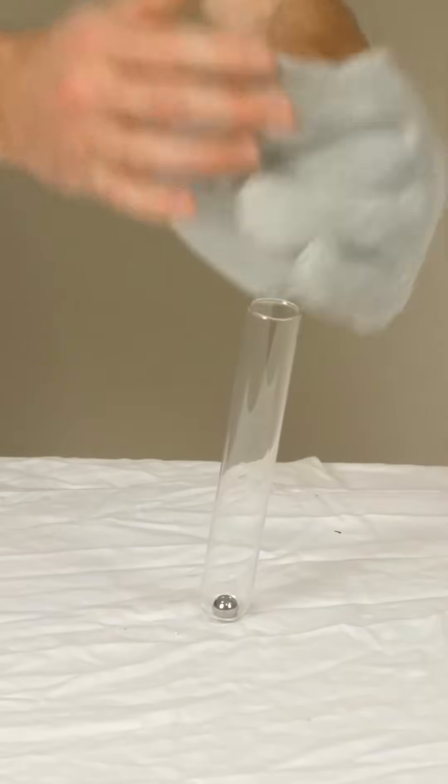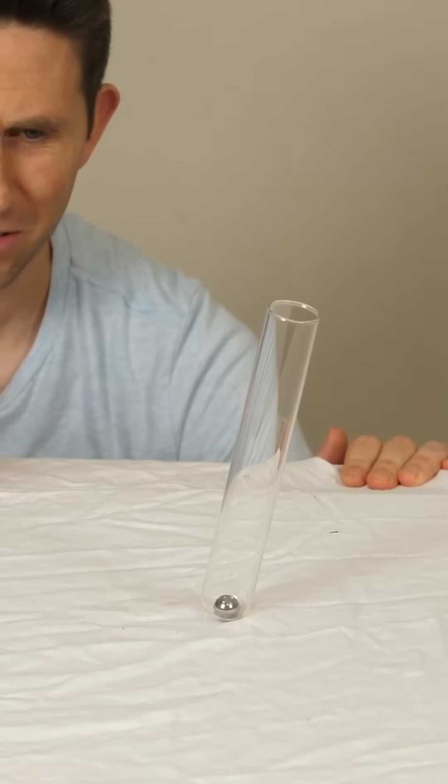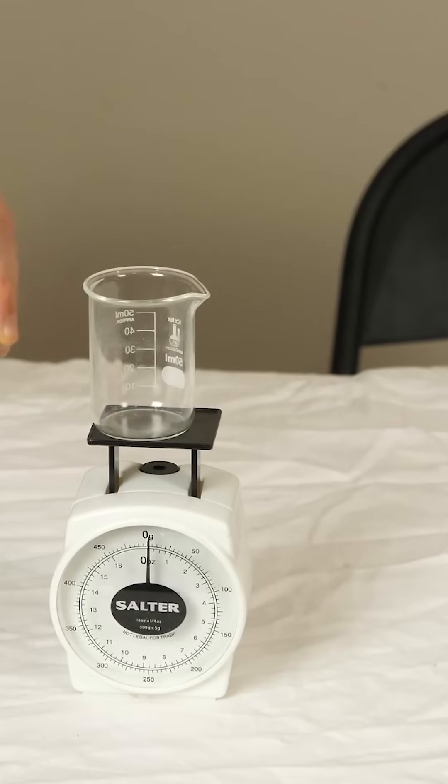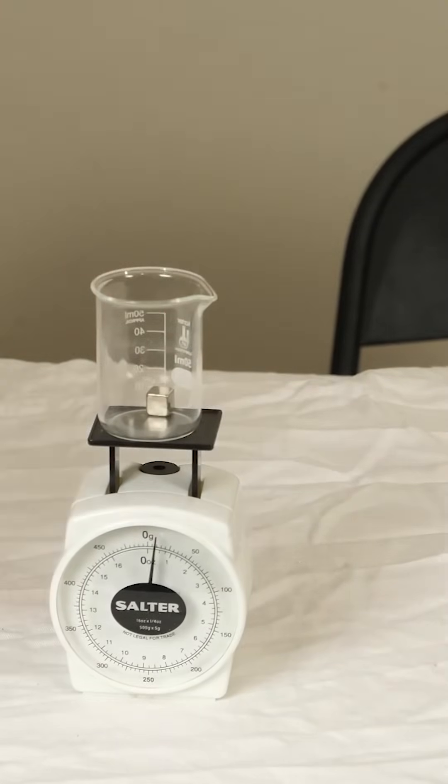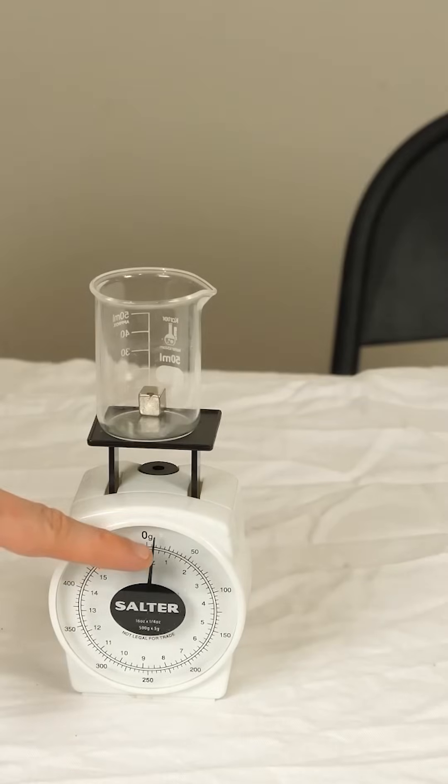Today we're going to be seeing how close you can get to a drop of a neutron star. So I have a cube here just at normal earth density. Put it on there. It weighs around only five grams.